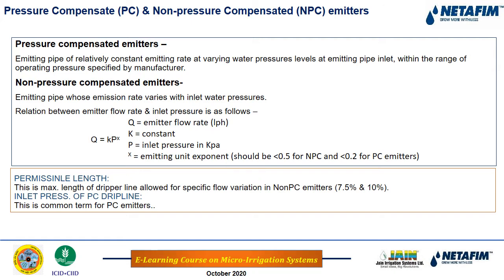There are different types of drippers: pressure compensated and non-pressure compensated. In pressure compensated drippers, the dripper discharge is constant irrespective of inlet pressure. In non-pressure compensated drippers, the discharge depends on inlet pressure. For non-pressure compensated drippers, we use the term 'permissible length' for a given flow variation of 7.5 percent. For pressure compensated drippers, there is no flow variation within the emitting pipe.